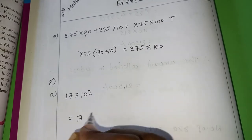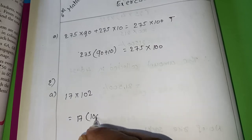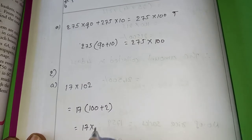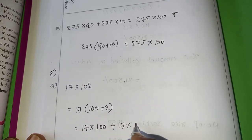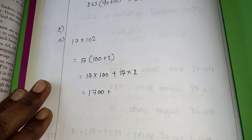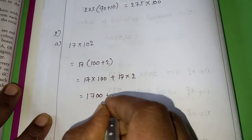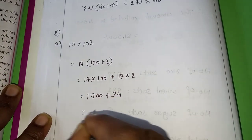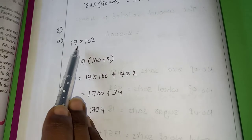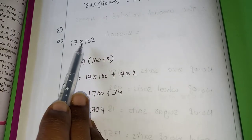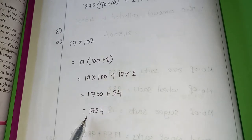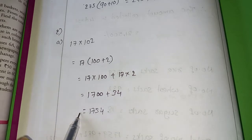For that, we can make a simple calculation. 17 into this 102, I am making it as 100 plus 2. So rewrite it. 17 into 100 plus 17 into 2. 17 into 100, 1700 plus 17 to 34. What is the answer? 1734. Easy or not? If you multiply 17 with 102, it will be a huge process. But if you simplify the answer using the distributive property, it will be very easy for us.